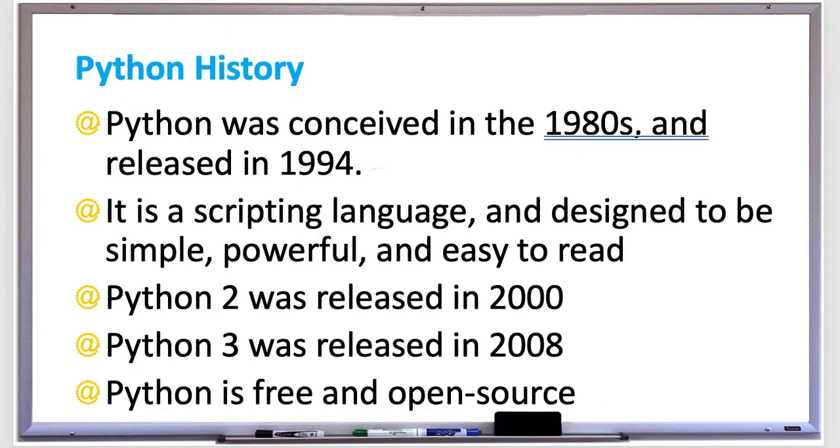In 1994, Python 1.0 was released. It provided support for functional programming constructs derived from the Lisp programming language.